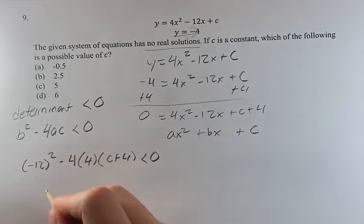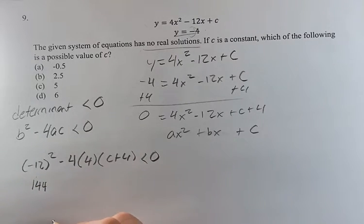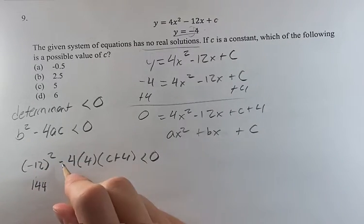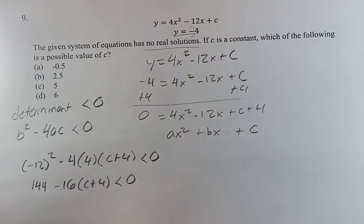All right, now we just have to solve for c. So negative 12 squared is the same as 12 squared, which is 144 - the negatives cancel when you multiply it twice. Minus 16 times c plus 4, that's less than 0.